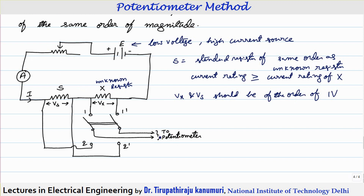The potentiometer is basically a null-type detection technique — it detects null measurement by comparing against a standard voltage source. Because of the null detection method, the resistance offered by the potentiometer is very high, meaning it takes a minimum current when connected to measure voltage across the unknown or standard resistor, and therefore does not disturb the circuit characteristics.